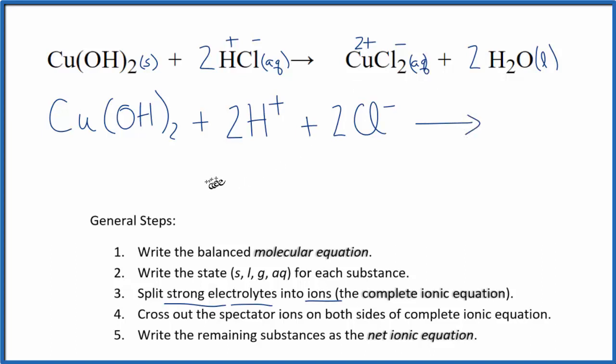And that's going to give us Cu²⁺, plus Cl⁻. And this subscript, that means we have two of them. And we need to put a coefficient of 2. Plus, we have our two water molecules there. So this is the complete ionic equation.